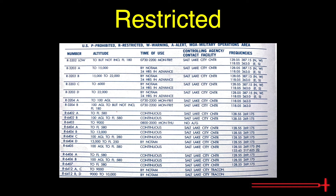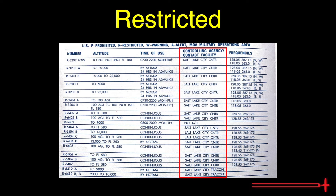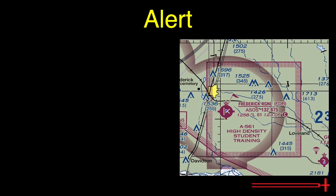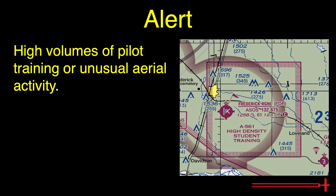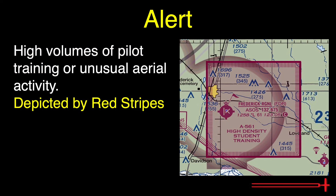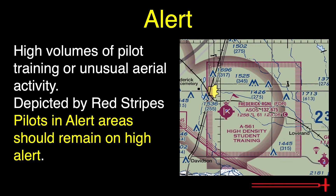Look at the chart tablature for additional information regarding restricted airspace. Here we have the name, vertical limits, time of use, controlling agency, and the frequencies on which to reach the controlling agency. Alert areas notify pilots of areas that may contain a high volume of pilot training or an unusual type of aerial activity. In this case, we expect a lot of student pilot training. Alert areas are depicted on the charts by a red striped pattern. Inside, we expect to see a coded name beginning with 'A.' As the name would suggest, pilots operating in alert areas should remain on high alert.